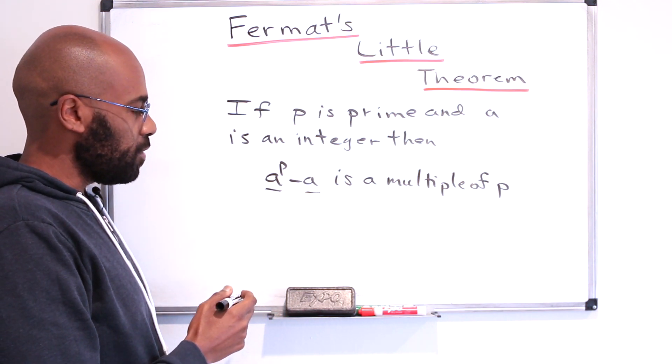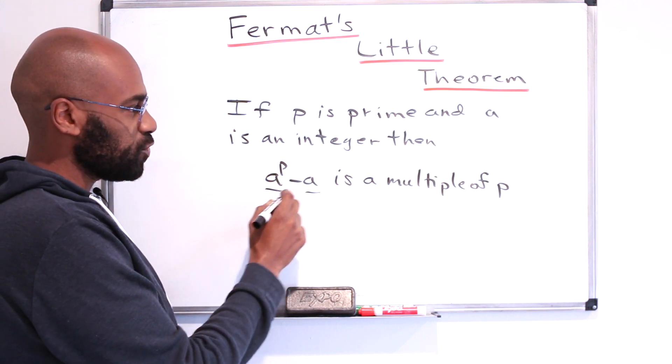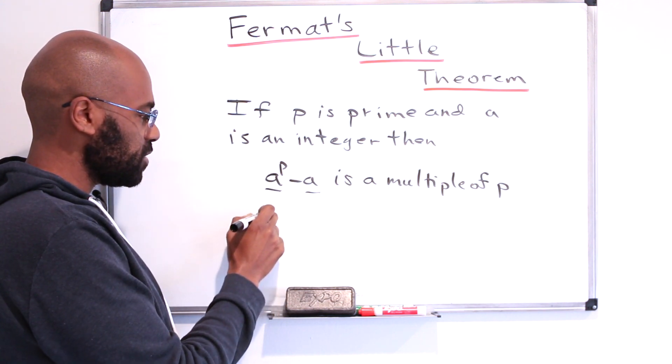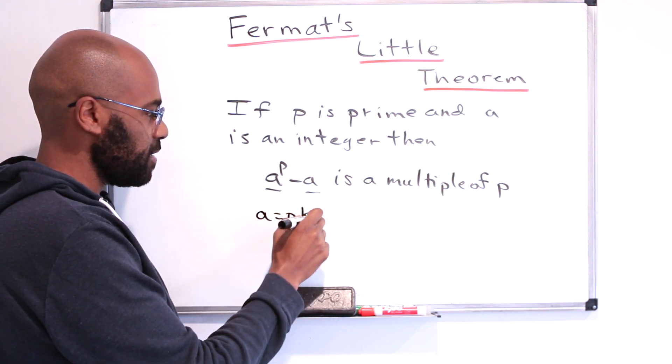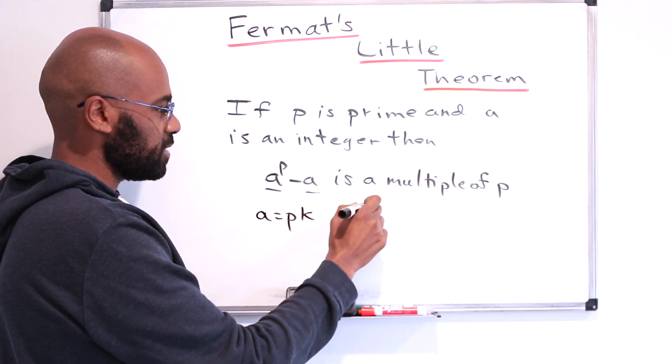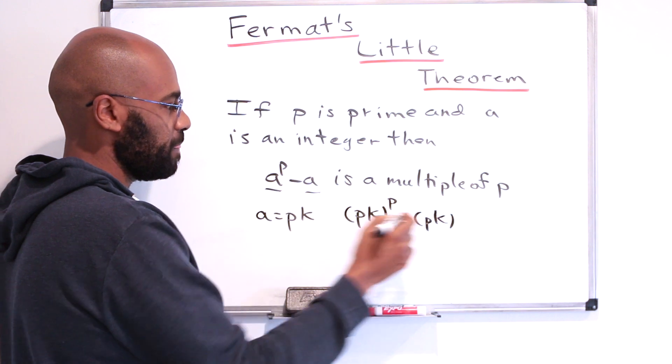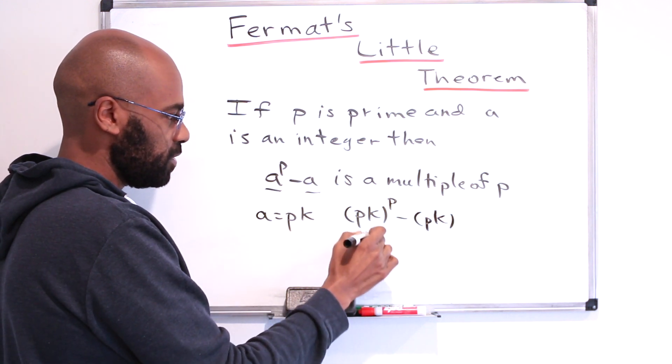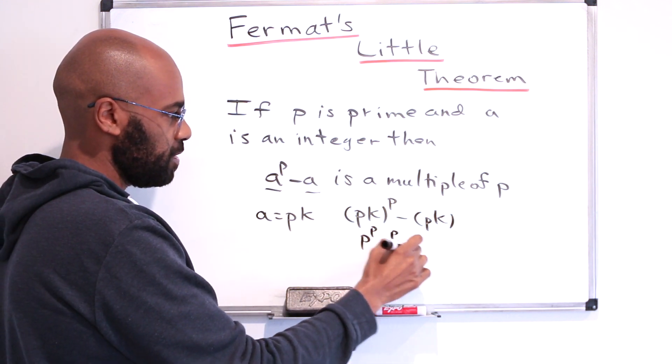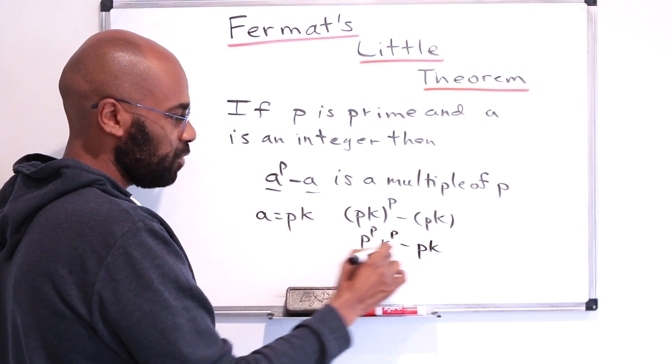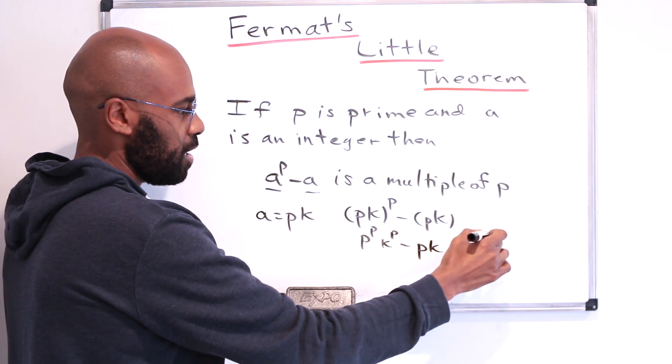I do want to make one comment though. Notice that if a actually is already a multiple of p, so let's say a is p times k, then this expression is pk to the p minus pk. And here, this will be p to the p k to the p minus p times k. And so we'll get a factor of p automatically.